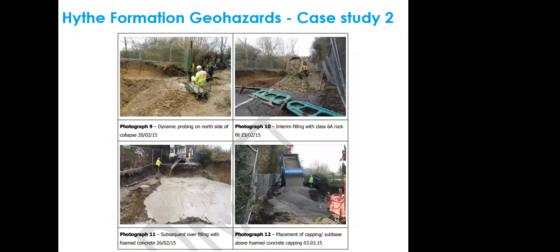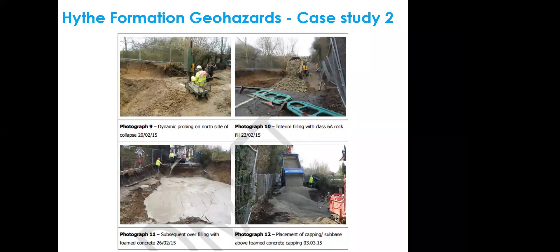Viewed from the side, a four-metre-deep section revealed glauconitic sands of the Hythe Formation with just a gravel layer above. Probing was carried out north of the collapse zone to check for voids and disturbance extending beyond the main collapse. It was decided to carry out an excavation-and-replacement exercise — digging out the entire collapse area to expose competent rock at the edges, then backfilling with rock fill, placing a layer of foam concrete above to create a firm base, with further capping and sub-base over that.